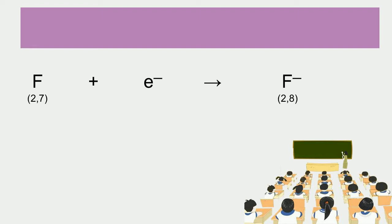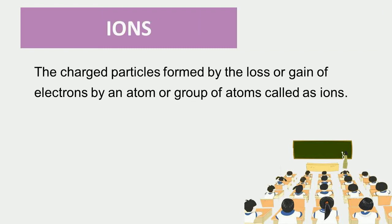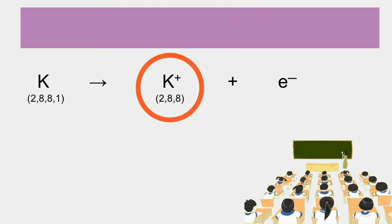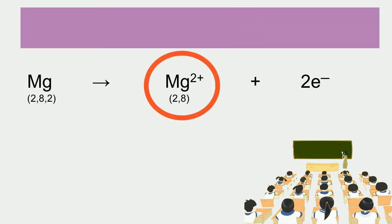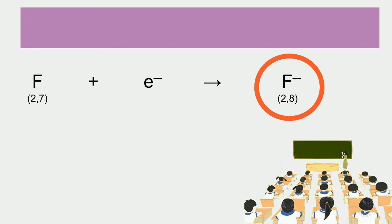Hence, when an atom gains extra electrons, it acquires negative charge. The charged particles formed by the loss or gain of electrons by an atom or group of atoms are called ions. Therefore, K+, Mg2+, O2−, and F− are all ions.